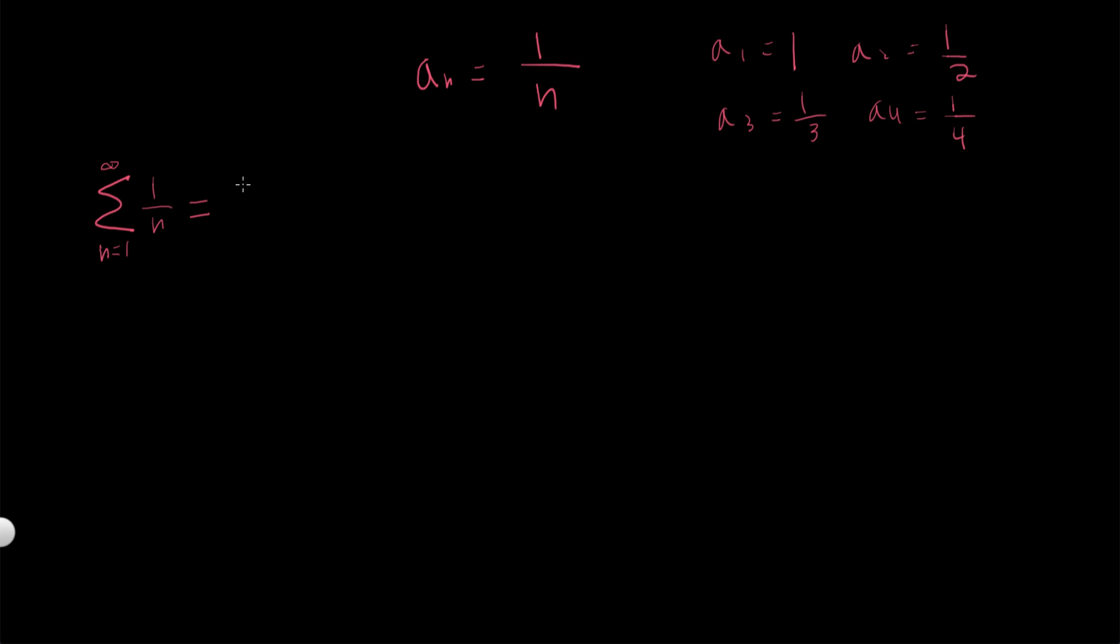So this infinite sum is just 1 plus 1 over 2 plus 1 over 3 plus 1 over 4 plus 1 over 5 plus 1 over 6 plus 1 over 7. I'll probably stop at 1 over 8 plus dot, dot, dot. All right. Let's see if we can find a pattern to determine whether this converges or diverges.